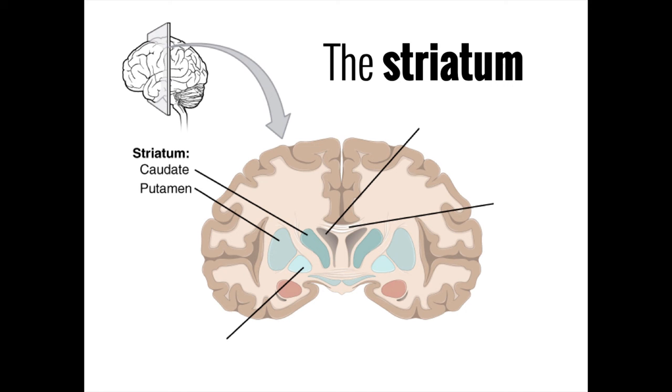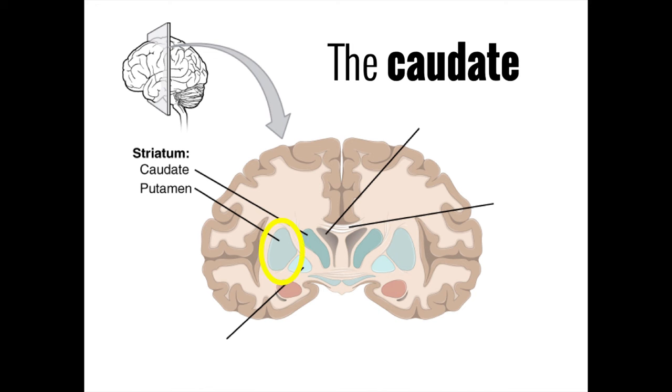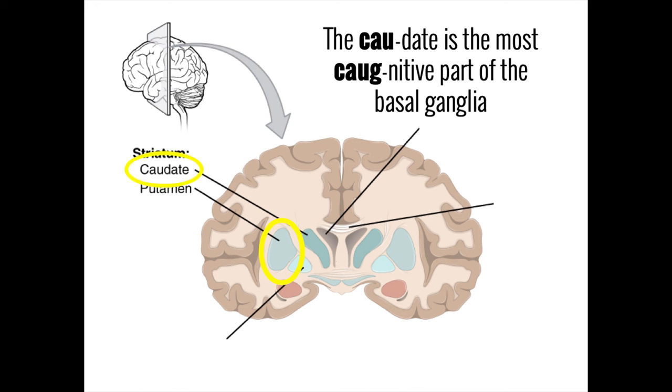In both the direct and indirect pathways, the initial signal from the motor cortex first travels to the striatum, which is itself composed of two things, the caudate nucleus and the putamen. The caudate nucleus is highly involved in any form of goal-directed activity and plays an important role in other cognitive functions such as memory and sleep. For this reason, you can think of the caudate as the most cognitive part of the basal ganglia.